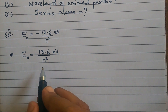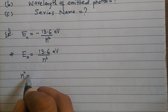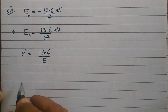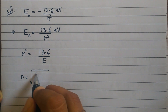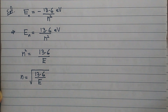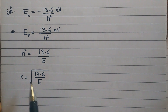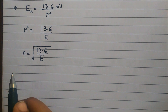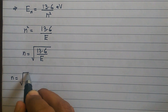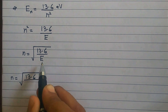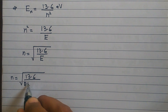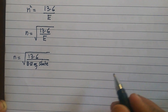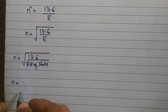If we need to find n, we rearrange: n squared equals 13.6 divided by E, and taking the square root, n equals the square root of 13.6 divided by E. So if binding energy is given, you directly put it into this formula: n = √(13.6 / E_binding).